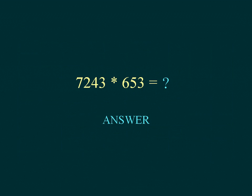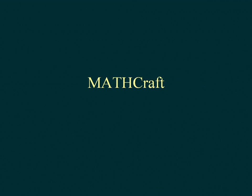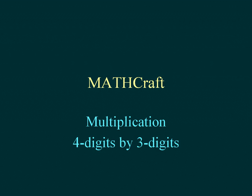Add the millions column and place the sum under the millions on the total line. The final answer is shown. Mathcraft — Multiplication: four digits by three digits.